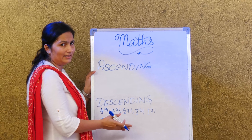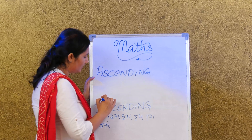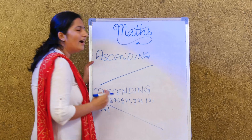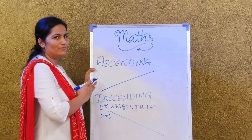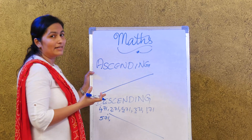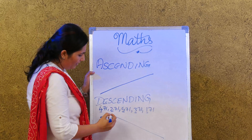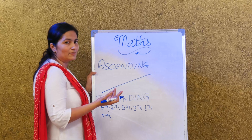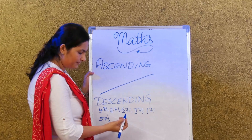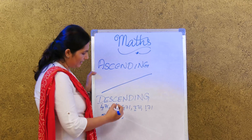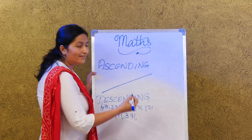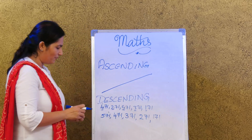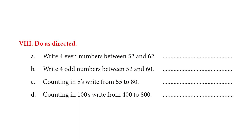Descending is like descending a hill — same concept as in English. So we start with 571, then 471, then 371, then 271, and finally 171. That's our descending order answer. Now on to page number 47.